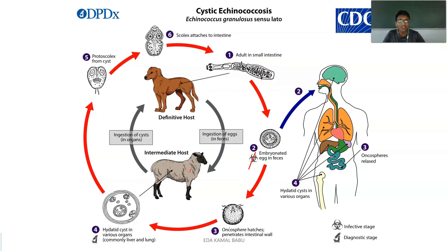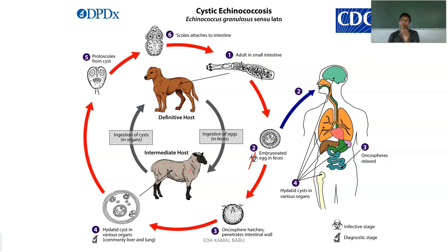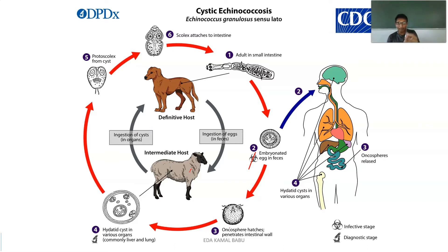Coming to the life cycle of Echinococcus granulosus, it has two types of hosts: a definitive host and an intermediate host, and also the human being. Dogs get infected whenever they consume the organs of an infected sheep. The organs of the sheep containing these cysts are ingested by the dog. In the dog, the organism grows in the small intestine and develops eggs there, which are shed through feces.